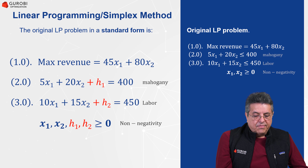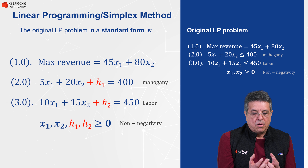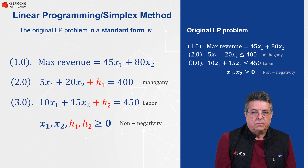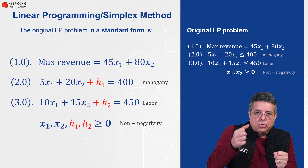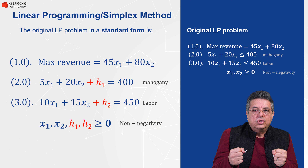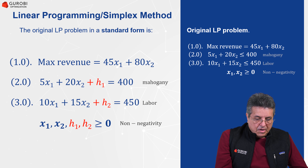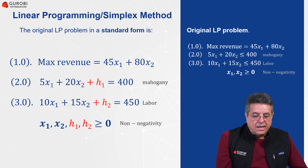For the labor constraint, the left-hand side has 10x1 plus 15x2, representing the total consumption of labor by the production plan x1 and x2. Adding the unused capacity, the consumption plus unused capacity should equal 450 hours of labor. Finally, we have the non-negativity constraints: x1, x2, h1, and h2 must all be greater than or equal to zero.